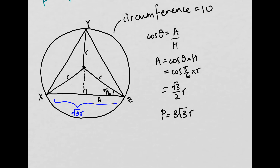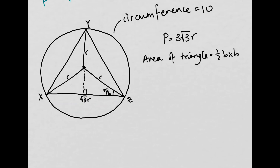Now we need to find a, the area. The area of a triangle is a half times the base times the height. We have the base, which is √3·r, but we don't know the height. We know one part of the height is r, but we don't know the other part — that's the height of the right-angled triangle.